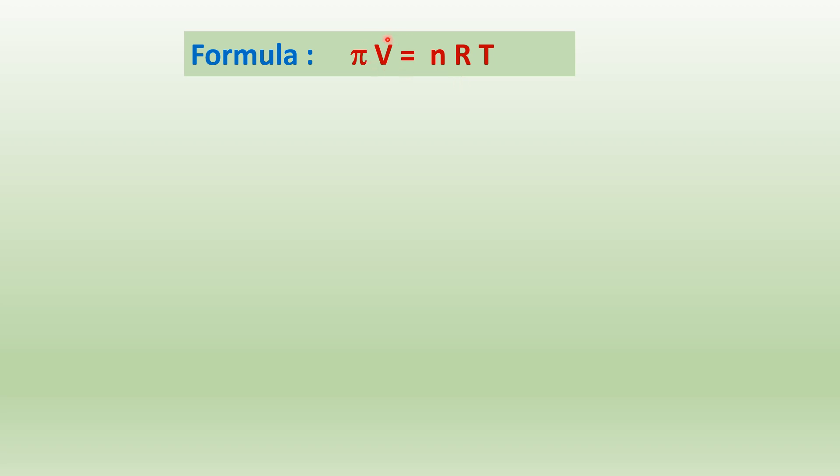Here, one gram is dissolved in one liter, therefore V equals one liter. n equals the number of moles of polymer or solute dissolved in one liter of the solution. R is the molar gas constant. T is the temperature.